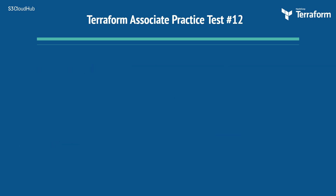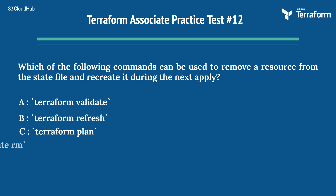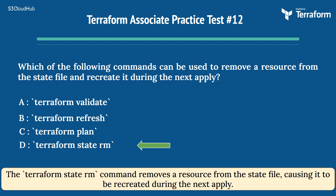The twelfth question: which of the following commands can be used to remove a resource from the state file and recreate it during the next apply? Options are: A) Terraform validate, B) Terraform refresh, C) Terraform plan, D) Terraform state RM. The right answer is Option D, Terraform state RM. The Terraform state RM command removes a resource from the state file, causing it to be recreated during the next apply.